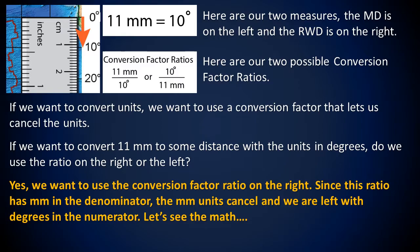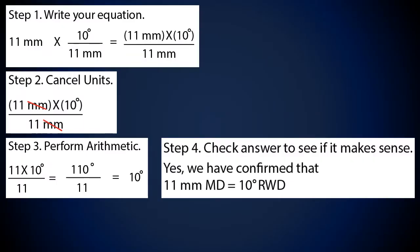Let's see the math and apply this. Step 1: write your equation. Step 2: cancel the units. Step 3: perform the arithmetic. Step 4: check the answer to see if it makes sense. We have confirmed that 11 millimeters in map distance is equal to 10 degrees in real world distance.